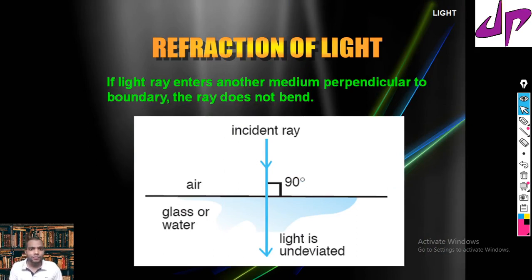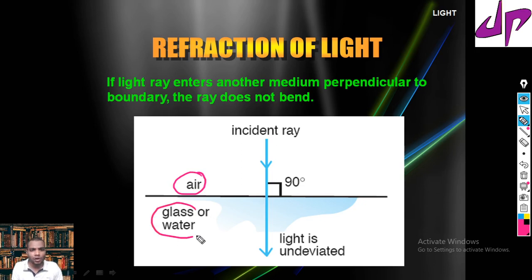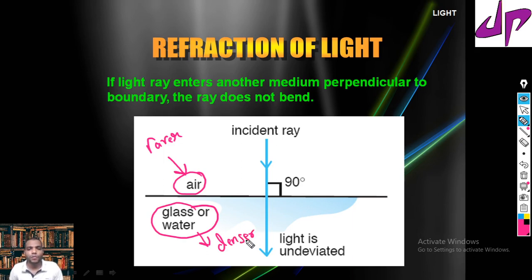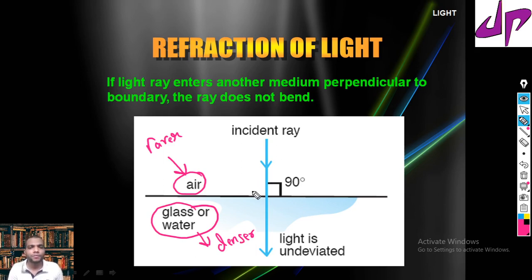Let us take a case. In the diagram shown here, the above medium is air and the below medium is either glass or water. Technically we call air a rarer medium, which has less density, and glass or water we call a denser medium.